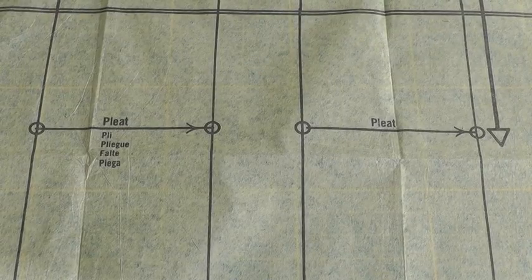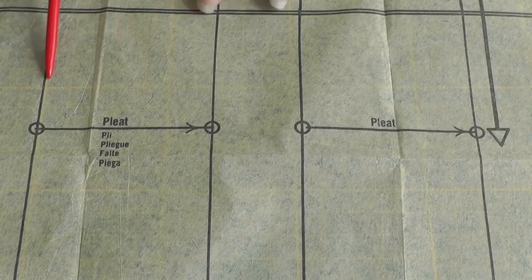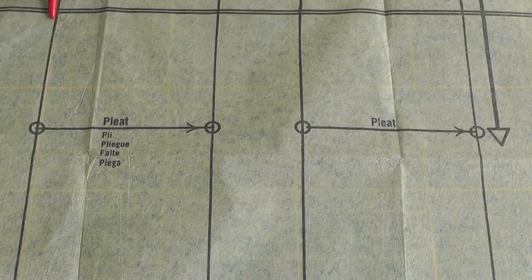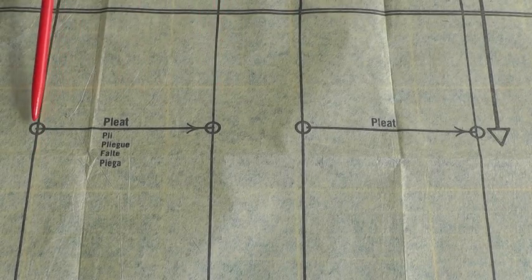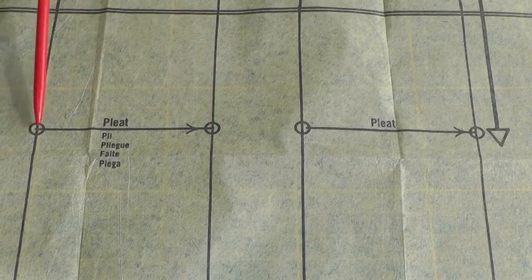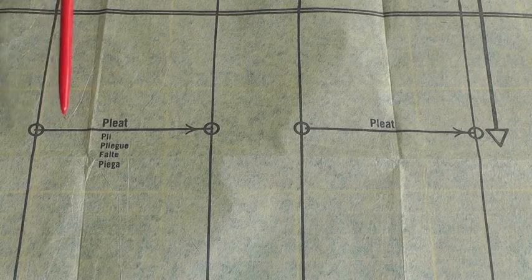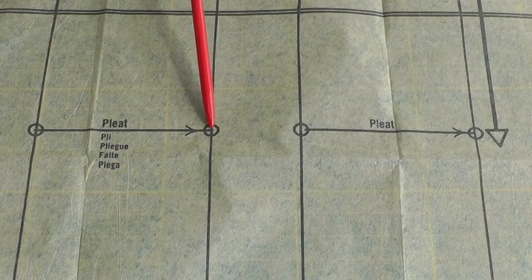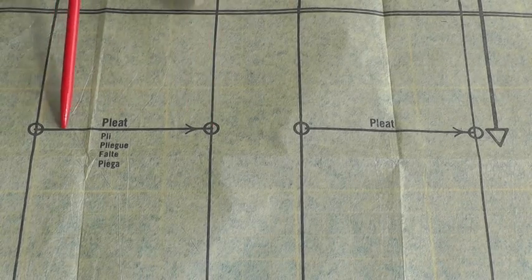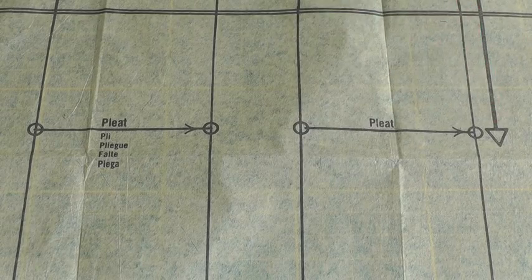Here again is another example where you've got the two parallel lines. Remember pleats are always in parallel lines and you've got your markings to match them up. With this one it's actually giving you the direction in which the pleat will fold in order to create the pleats, so the pleats will be all going towards the center of the garment.